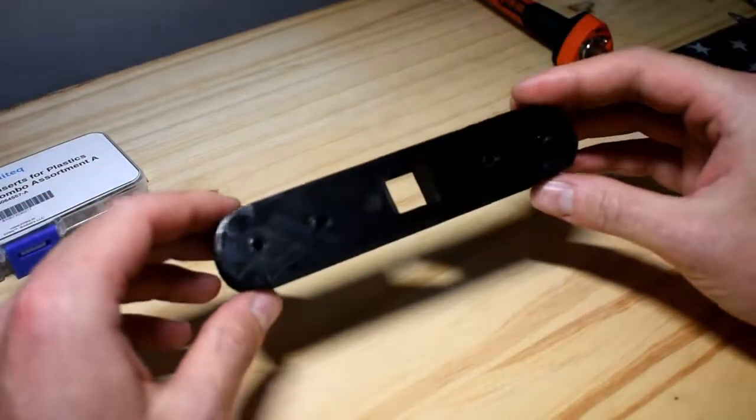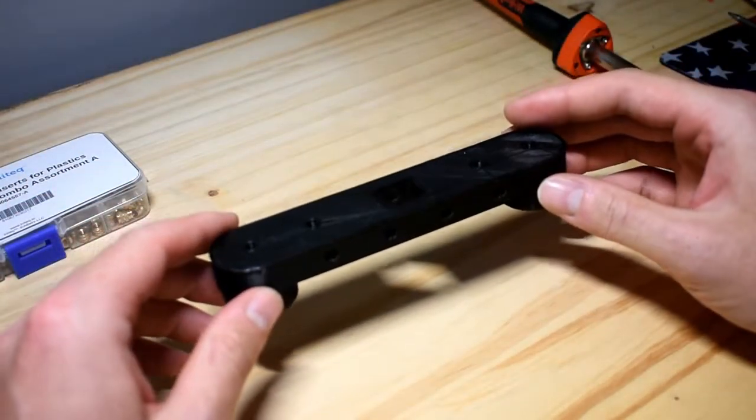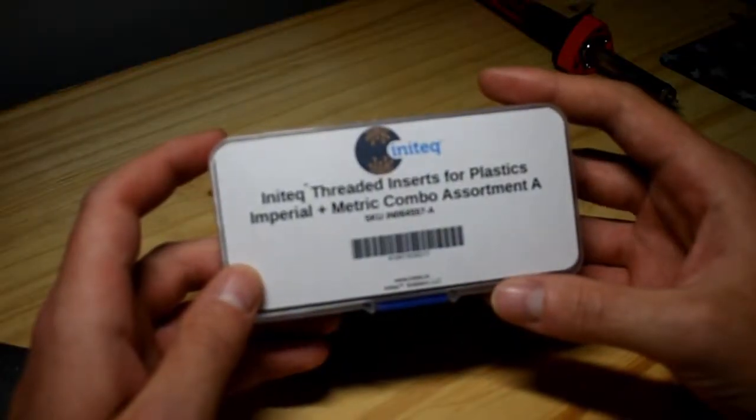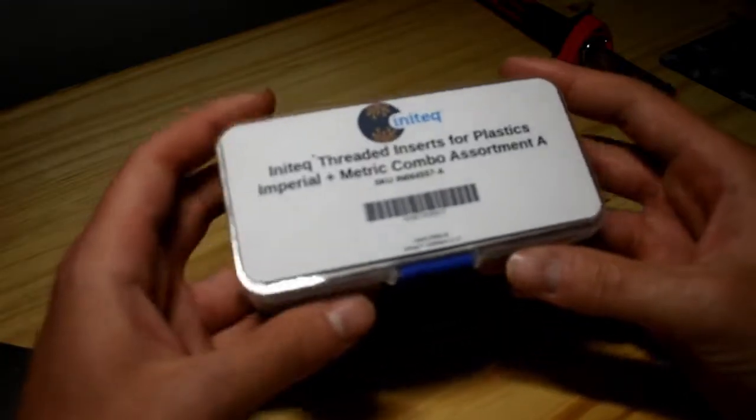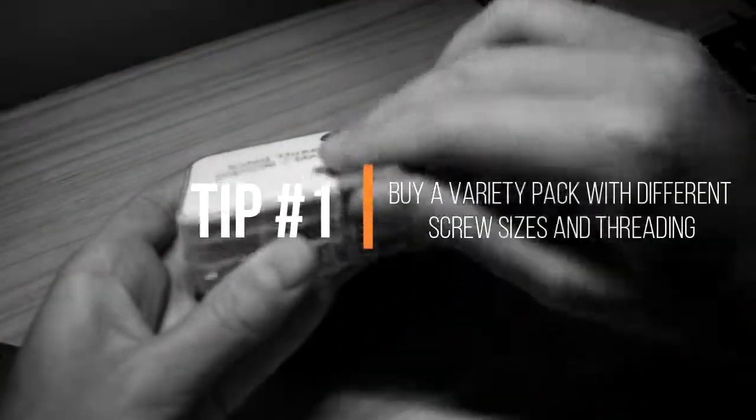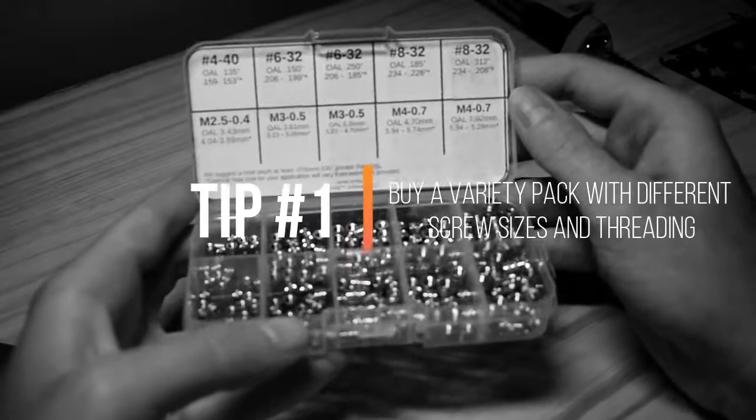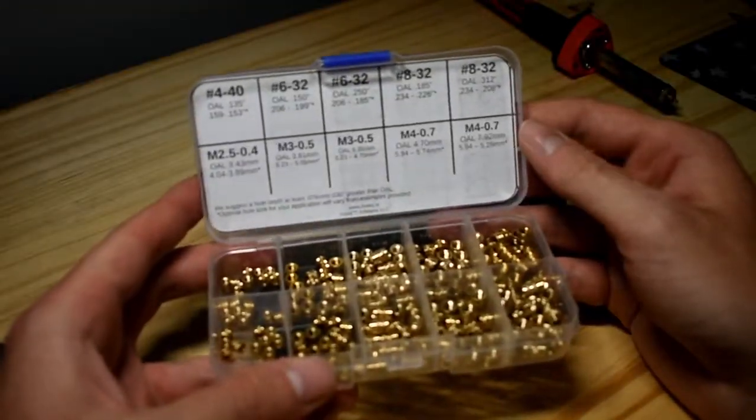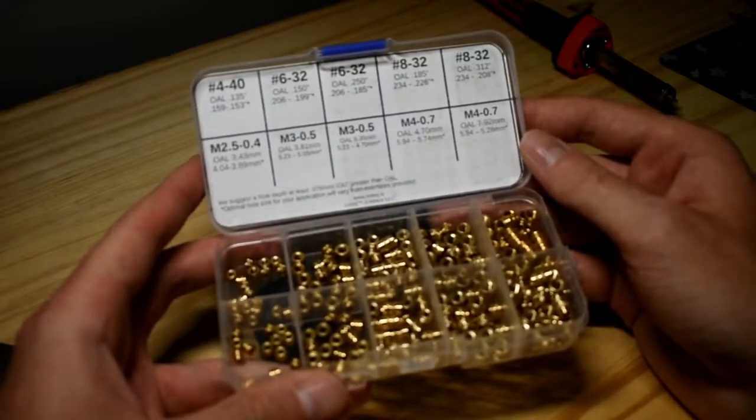So I already have my 3D printed part, and I have these threaded inserts from Inatec. This comes in a really nice case and it even labels each insert, which is really nice because sometimes it doesn't come with the labeling so you don't know what is what.